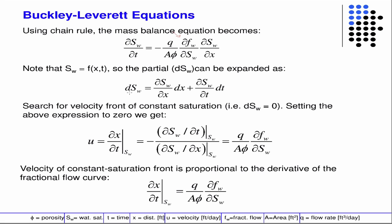And then if we investigate a small change in the water saturation, again using the chain rule, we get this equation. What we're looking for is the front — the point at which the change in saturation is zero at a constant saturation front. So since there's no change, this goes to zero, and we divide both sides of the equation by dt and solve for dx/dt.